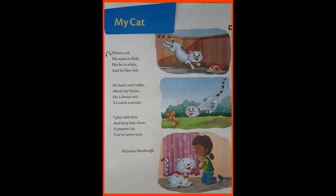In this poem, a little girl has a pet cat. She named the cat Rish. So what is the name of the cat? Rish. Rish has white fur. Here, fur means the cat's coat, which is so soft.